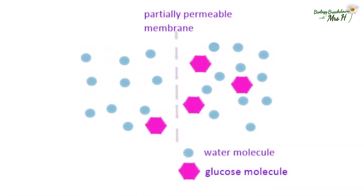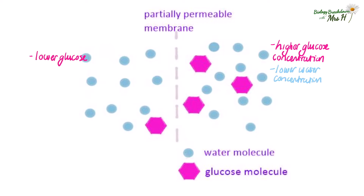Which direction will the water molecules move? On the right hand side there are more glucose molecules dissolved in the water compared to the left of the partially permeable membrane. The higher the glucose concentration, the lower the water concentration is going to be. The lower the glucose concentration, the higher the water concentration will be.